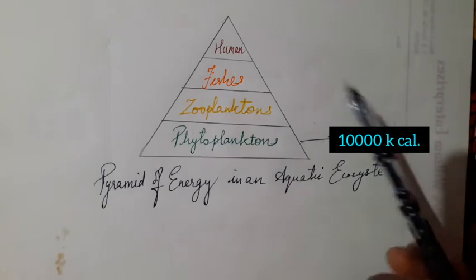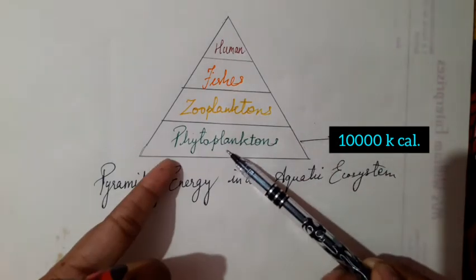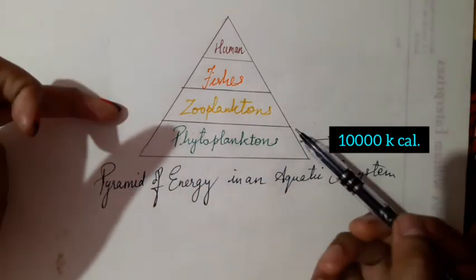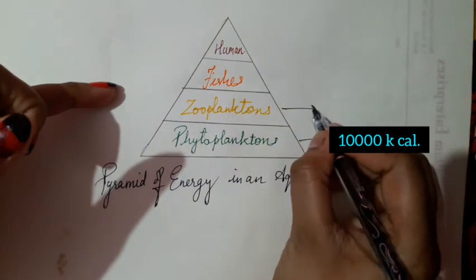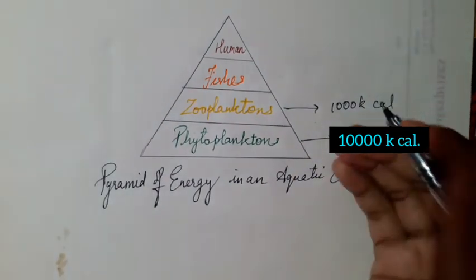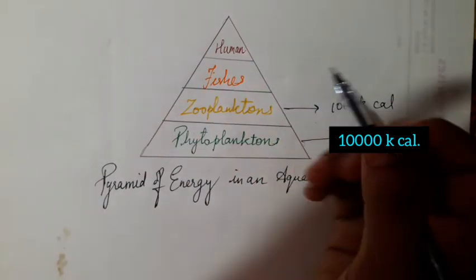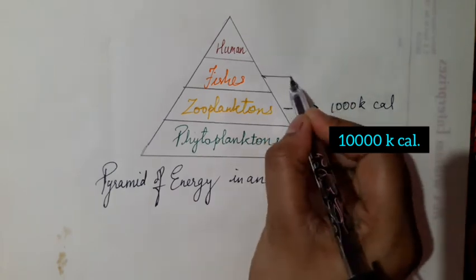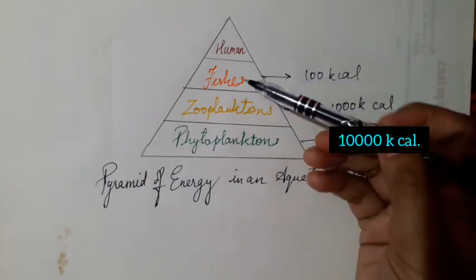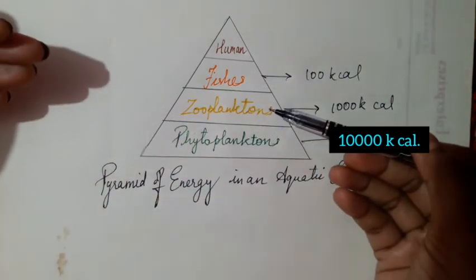Therefore the phytoplankton, as it is having 10,000 kilocalories, after eaten by the zooplankton, the zooplankton only gets 1,000 kilocalories. Rest of the calories is being released out.